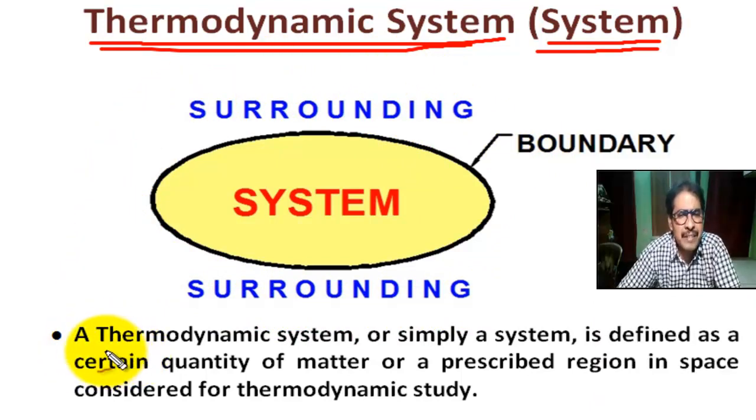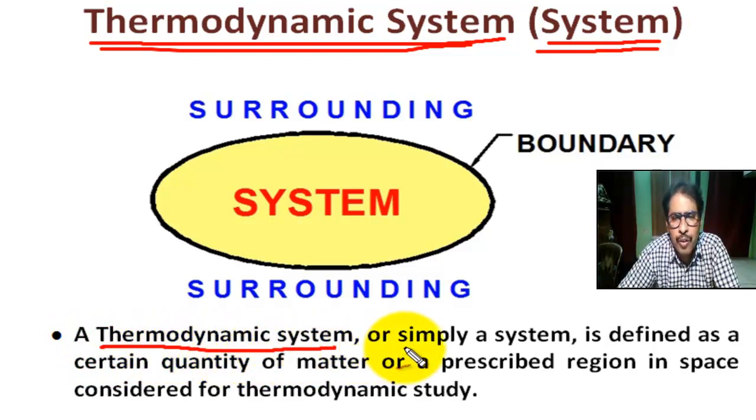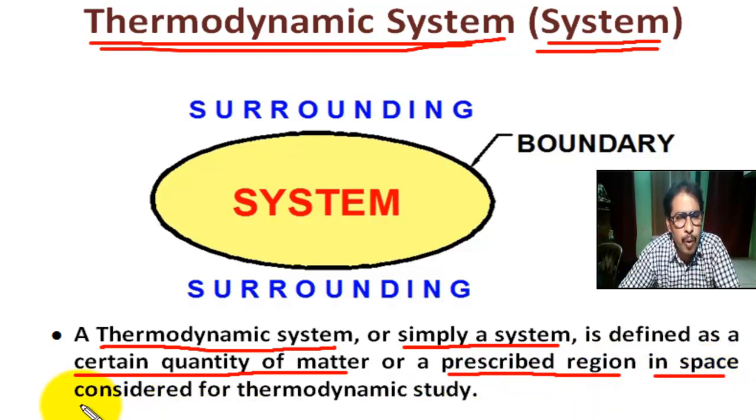A thermodynamic system, or simply a system, is defined as a certain quantity of matter or a prescribed region in space considered for thermodynamic study.